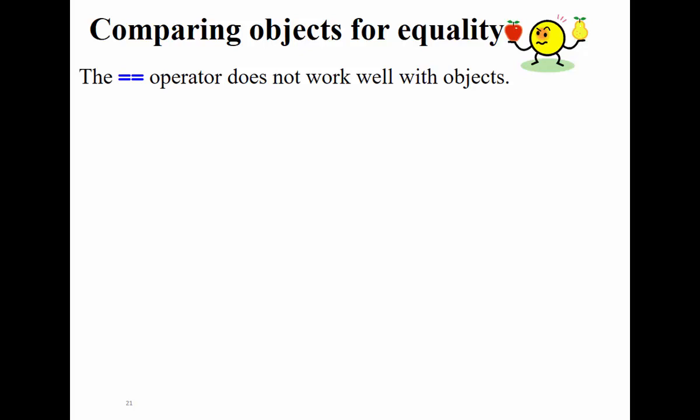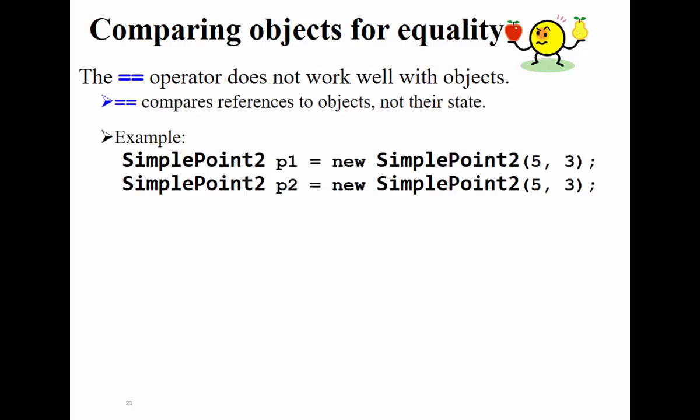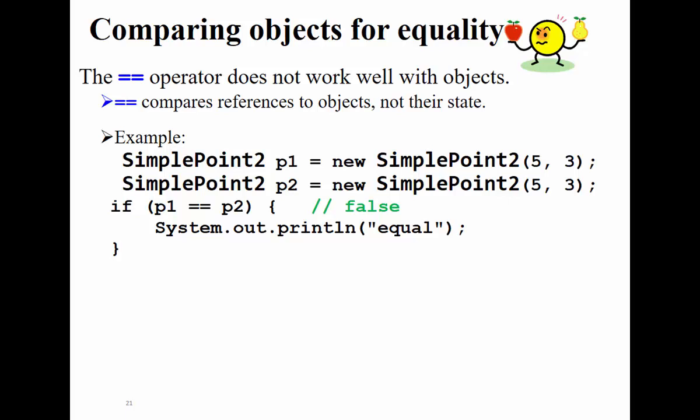If you create two Point objects — P1 and P2 — and give them the same values for x and y, and then write `if (P1 == P2)`, this is actually false. Why? Because P1 is a reference to an object and P2 is a reference to an object. P1 stores the memory address where its object exists — maybe address 600. P2 stores the memory address of its object — maybe address 700. So you are asking: is 700 equal to 600? No. The status of the objects are equal, but their addresses are not. That's why it's critical to override the equals method.